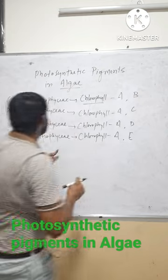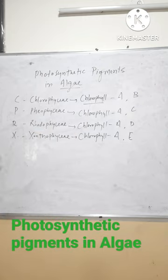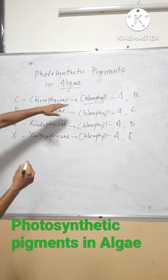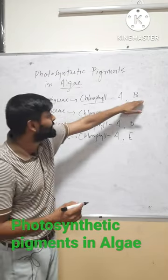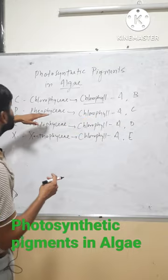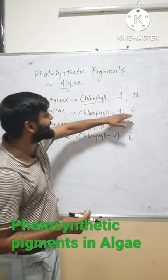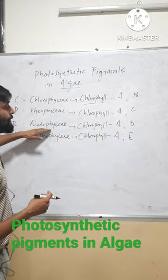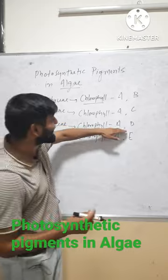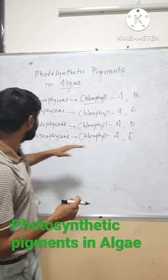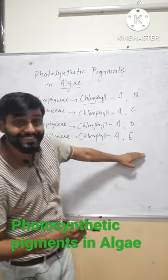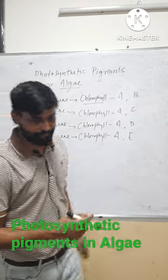These photosynthetic pigments are present as follows: in Chlorophyceae, chlorophyll a and b are present; in Phaeophyceae, chlorophyll a and c; in Rhodophyceae, chlorophyll a and d; and in Xanthophyceae, chlorophyll a and e.